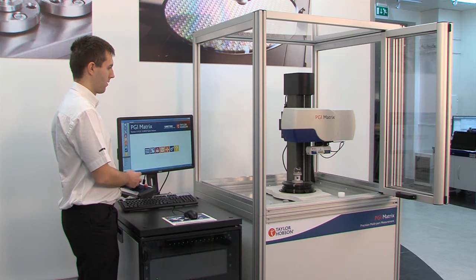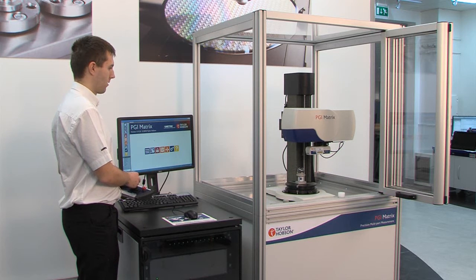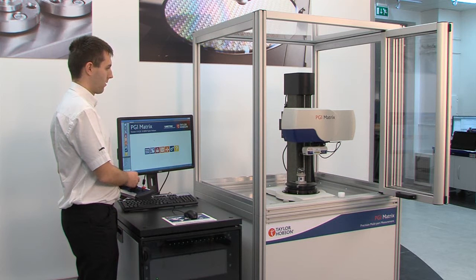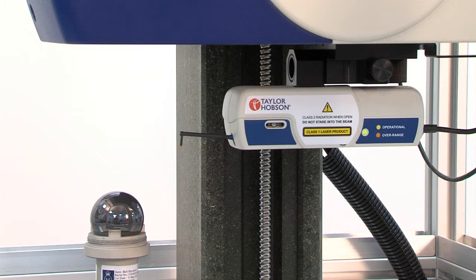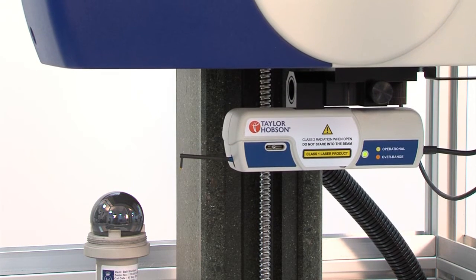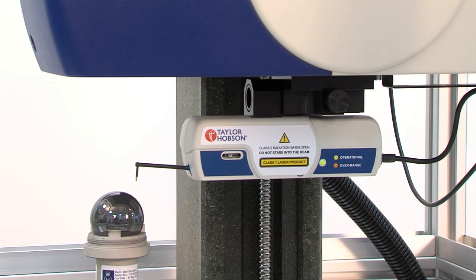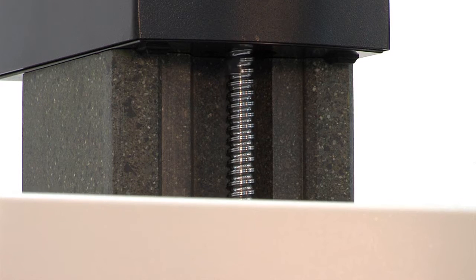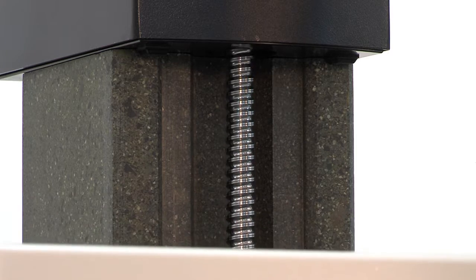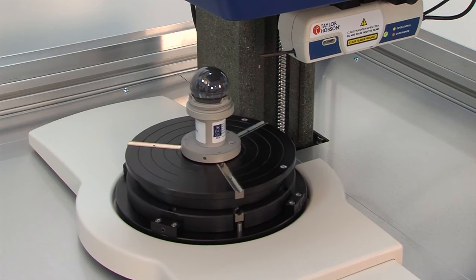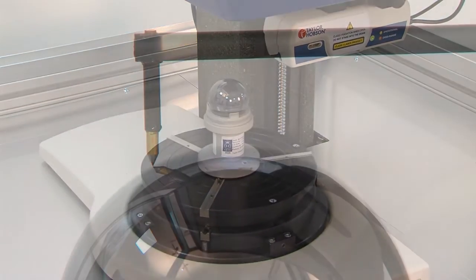The PGI Matrix from Taylor Hobson is a fully automated system for precision optics measurement. It is easy to program, easy to use and extremely accurate. It is packed with powerful analysis tools to improve your capacity and capability.